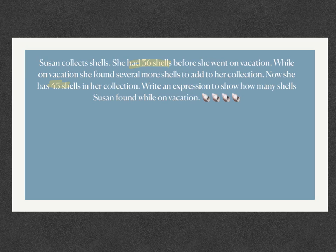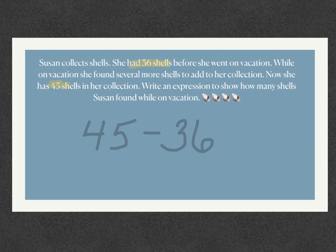If I multiply them, I'll get an even bigger number; and if I divide, I'd get a very small number. The only operation left is subtraction. So I want to start with the 45 shells she now has in her collection and subtract the 36 she had before she went on vacation. This expression — 45 − 36 — will show how many shells Susan collected while on vacation.